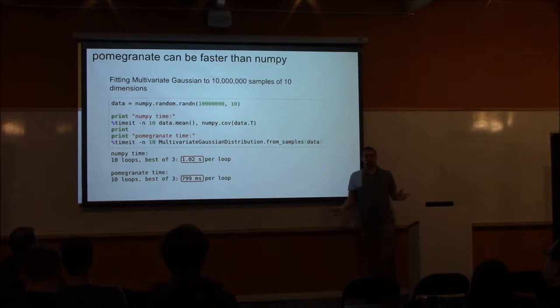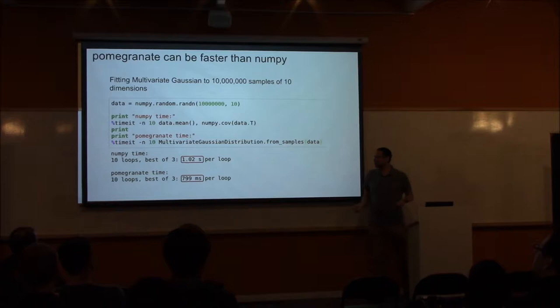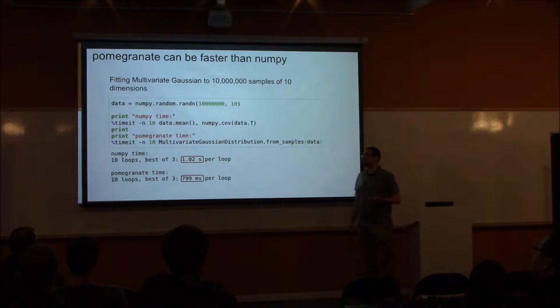Since pomegranate is supposed to focus on big data, let's say we want to fit 10 million samples in 10 dimensions and fit a multivariate Gaussian distribution. Pomegranate takes 800 milliseconds, whereas NumPy takes around one second. The reason is that when you compute the covariance matrix you have to recalculate the mean, so pomegranate saves that pass through the data.